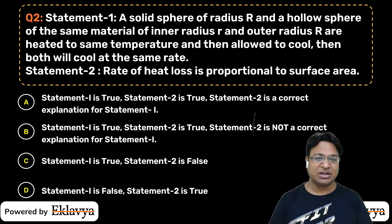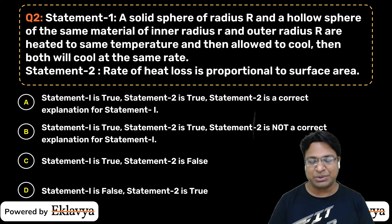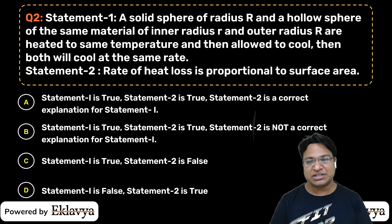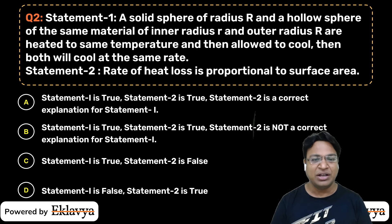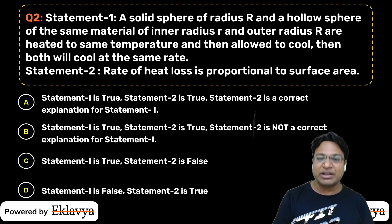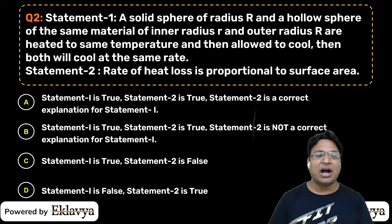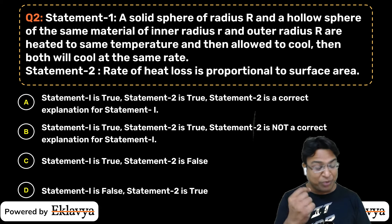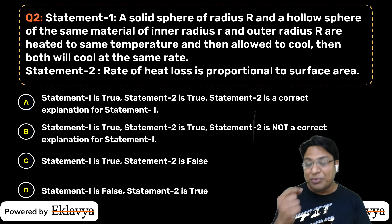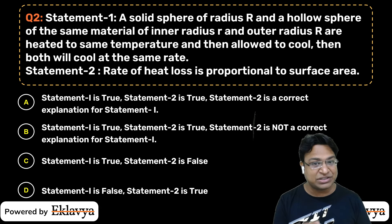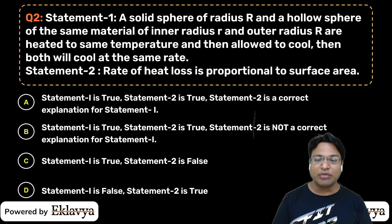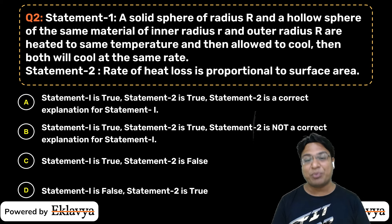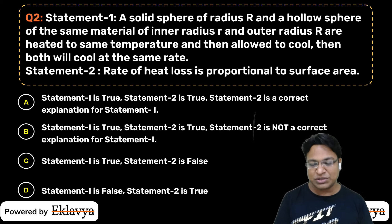This question involves two statements. Statement 1: a solid sphere of radius R and a hollow sphere of the same material with inner radius r and outer radius R are heated to the same temperature and then allowed to cool. Both of them will cool at the same rate. Statement 2: the rate of heat loss is proportional to the surface area. We need to judge both statements.